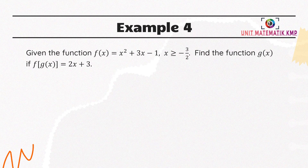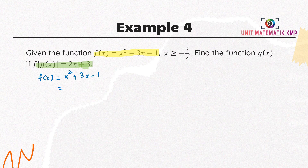For this example, it gives you the composite function and f(x) — only one function. For function f(x), which is a quadratic function given in general form, we can first change it into standard form. The standard form of the quadratic will be (x plus 3 over 2) squared minus 13 over 4. You can refer to how to change the form in quadratic function characteristics.